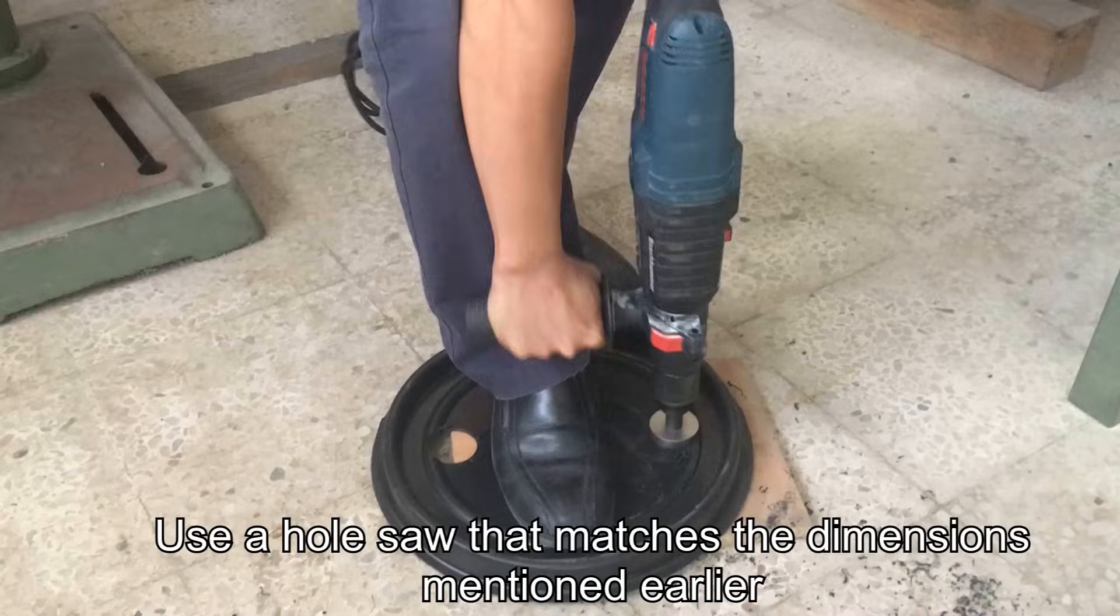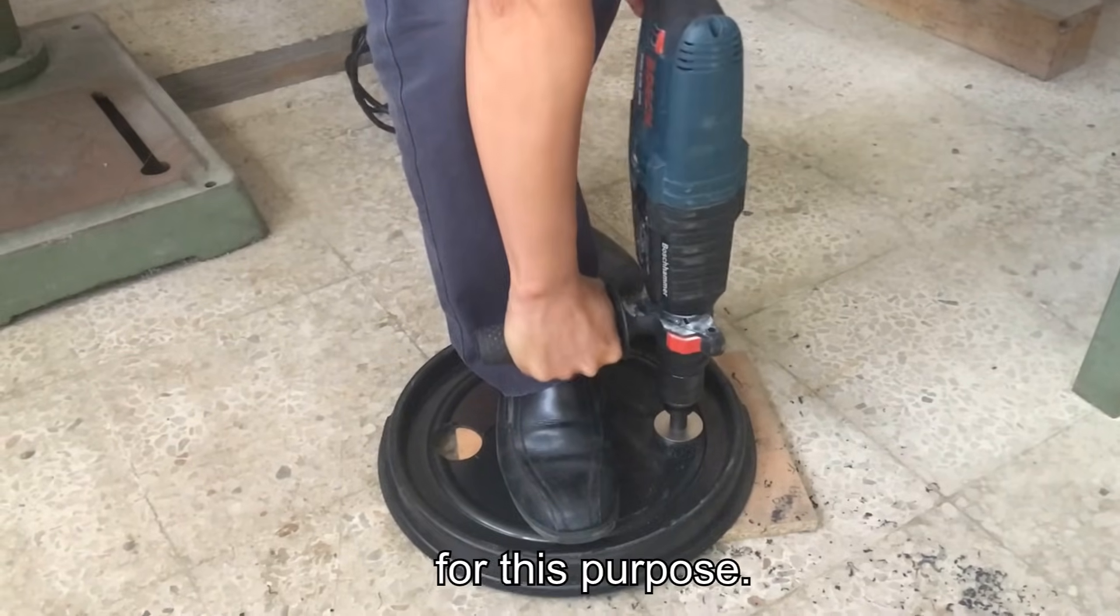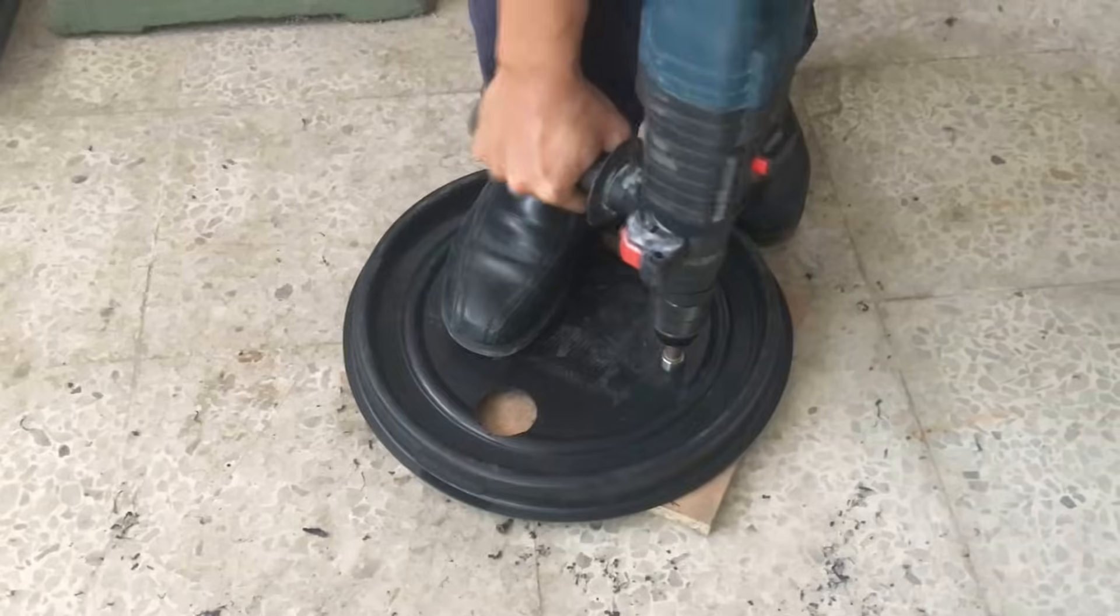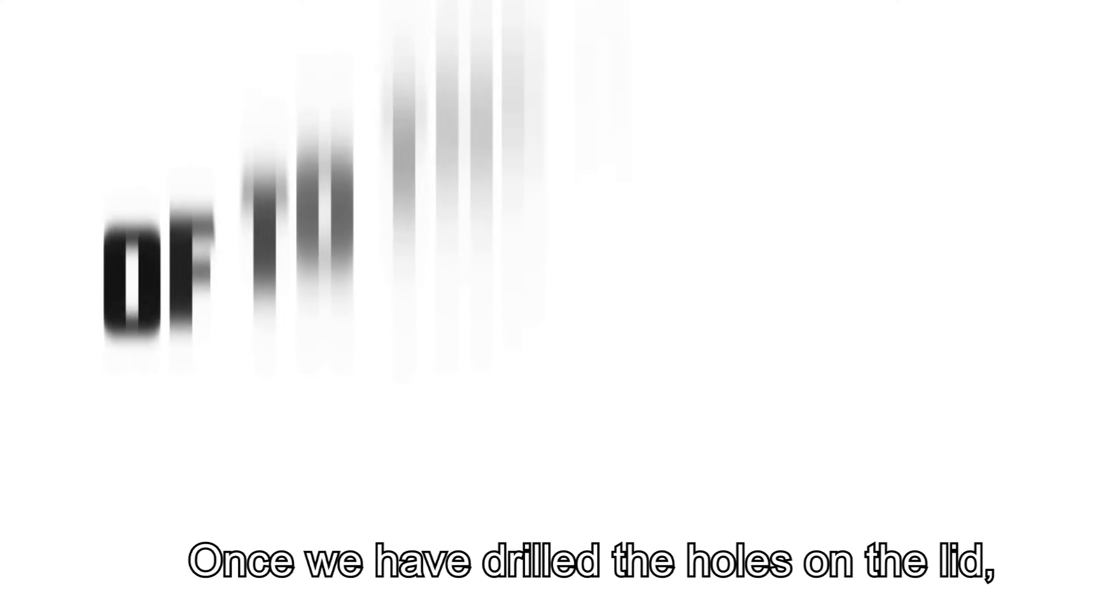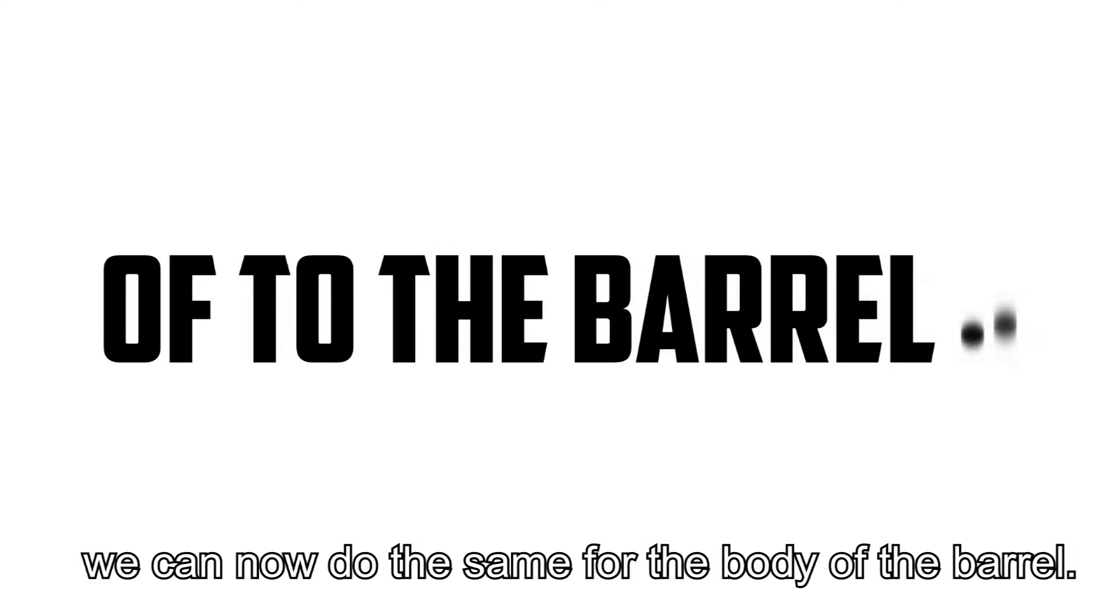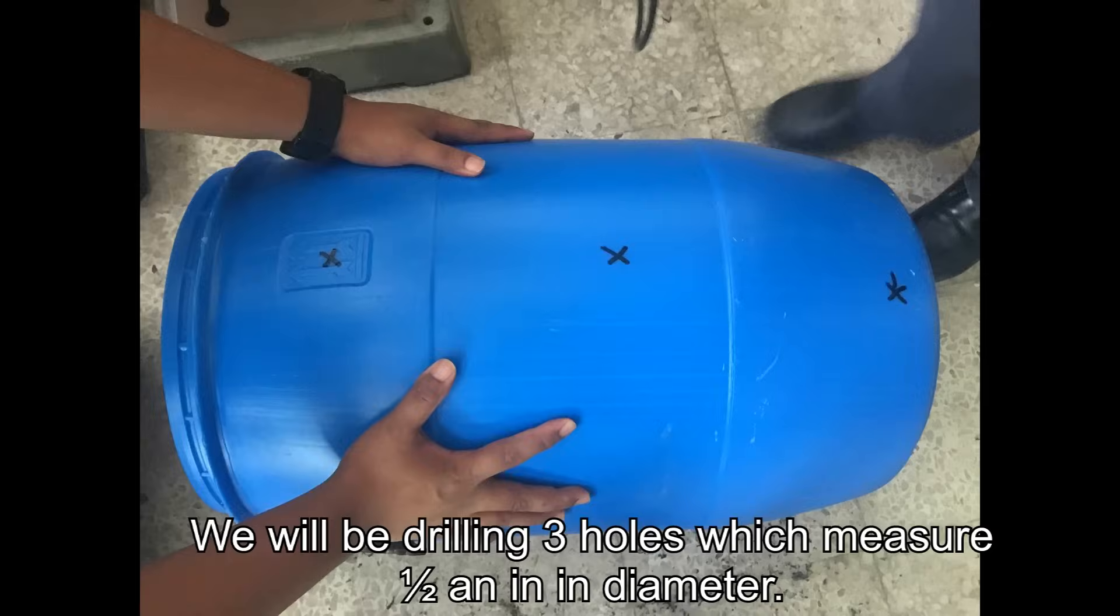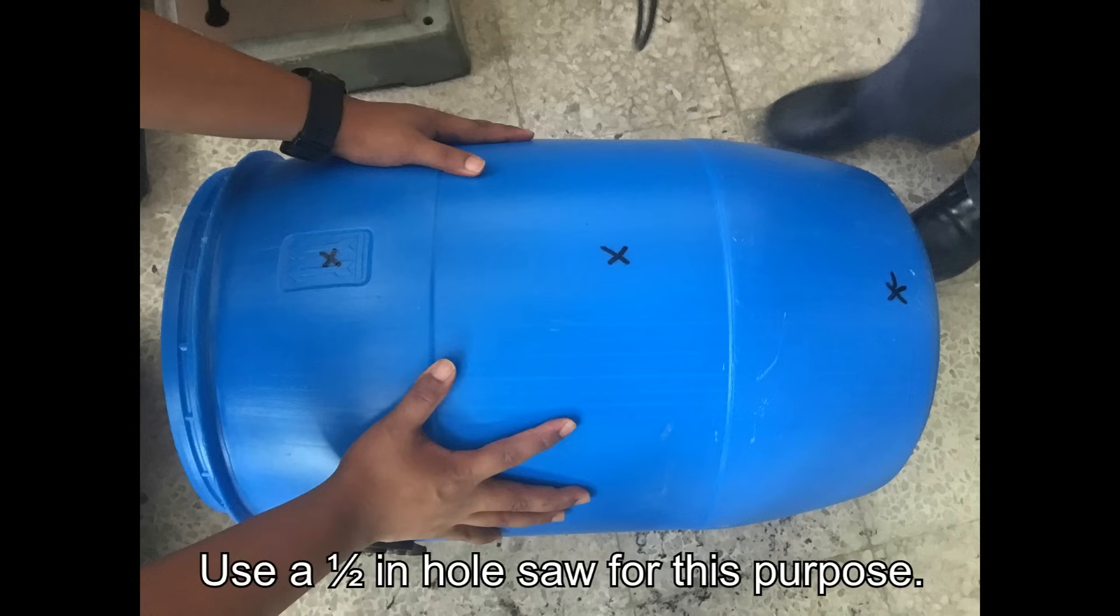Use a hole saw that matches the dimensions mentioned earlier for this purpose. Once we have drilled the holes on the lid, we can now do the same for the body of the barrel. We will be drilling three holes which measure 1.5 inches in diameter. Use a 1.5 inch hole saw for this purpose.